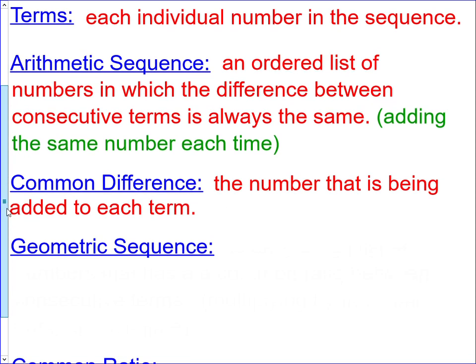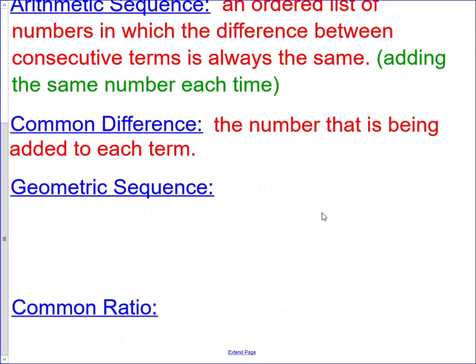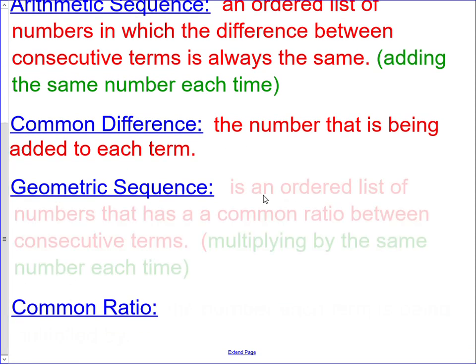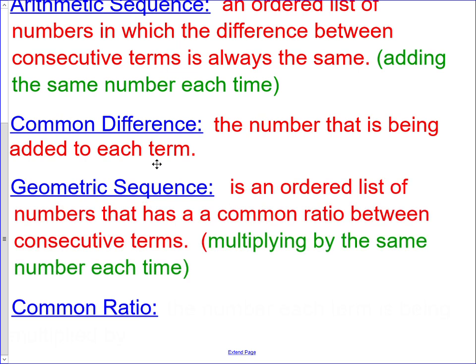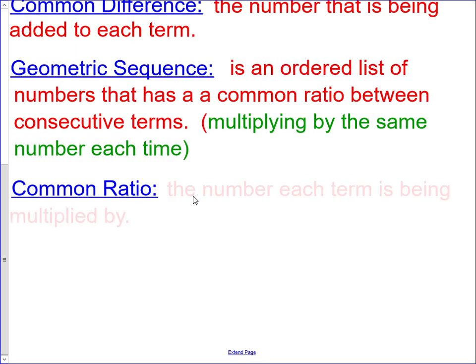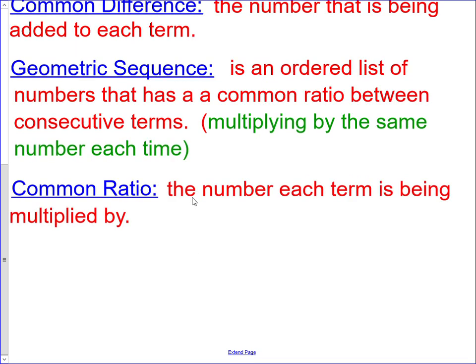A geometric sequence is an ordered list of numbers that has a common ratio between consecutive terms. In other words, they're multiplying by the same number each time. The common ratio is the number each term is being multiplied by.